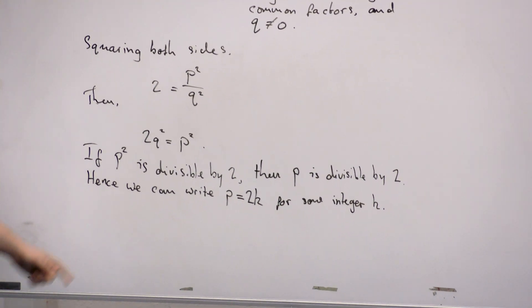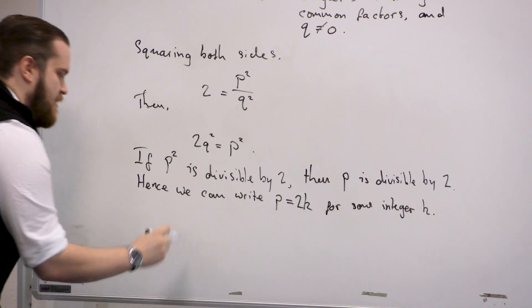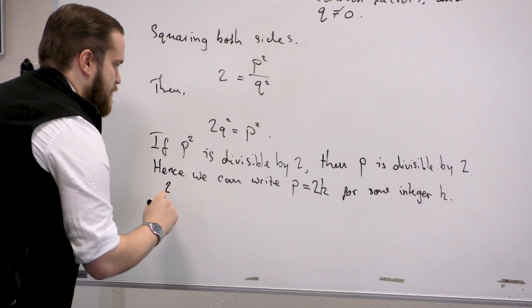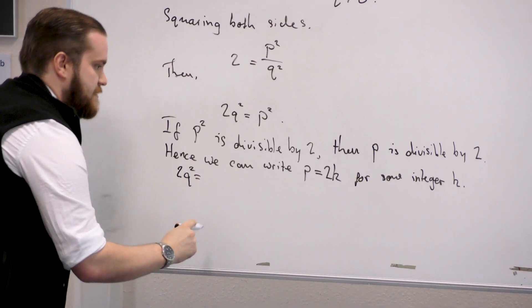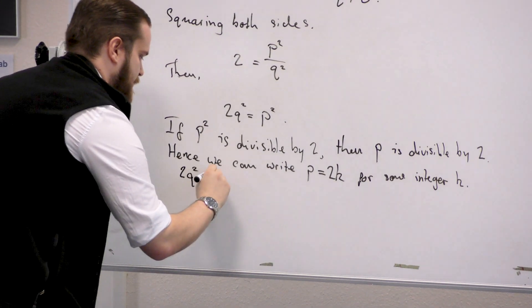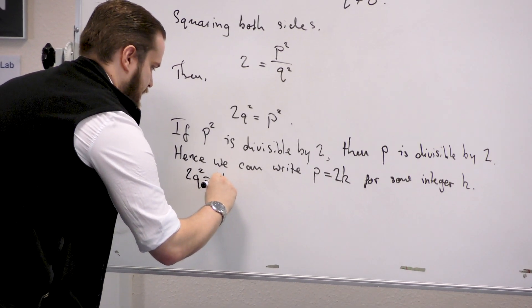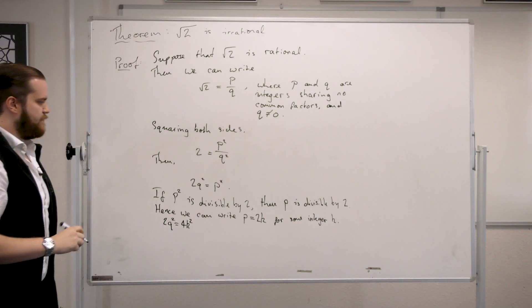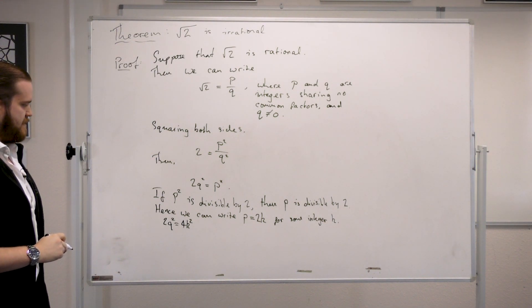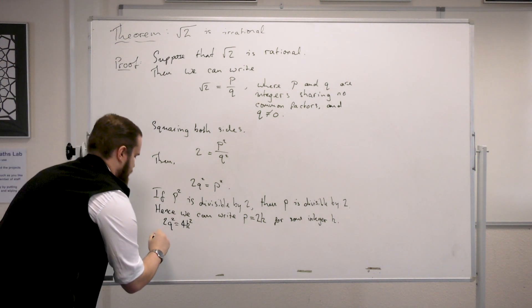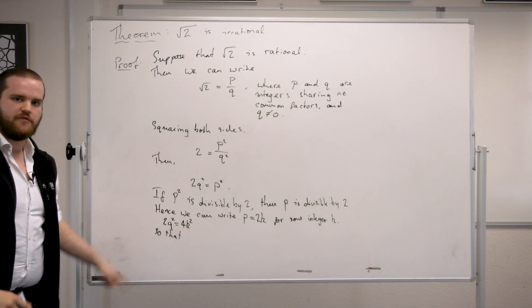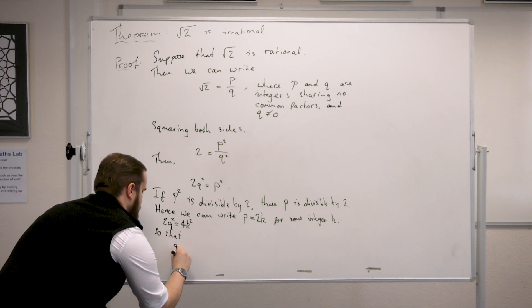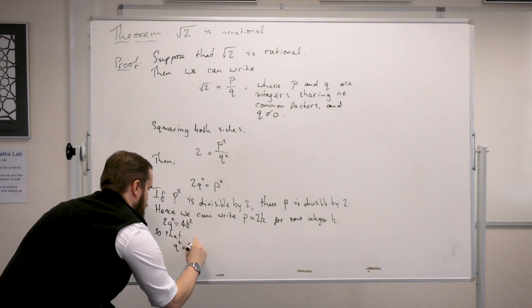And then if we plug this in up here, we have 2q squared equals 4k squared. And so if we divide a 2 off both sides, then we have q squared equals 2k squared.